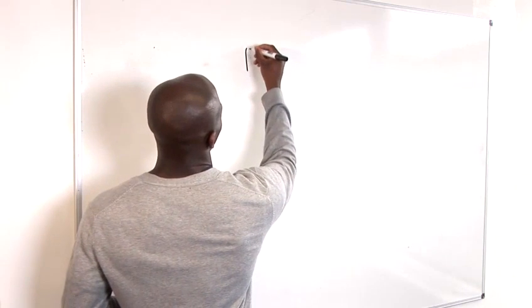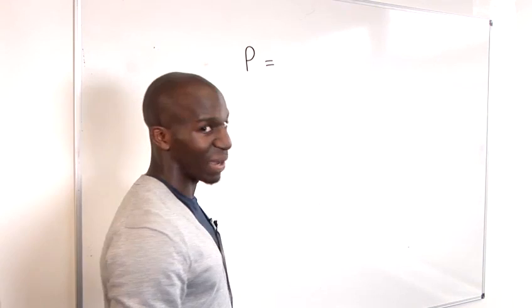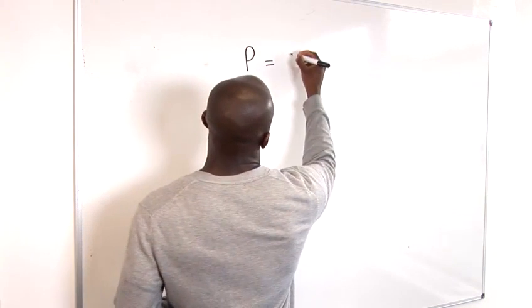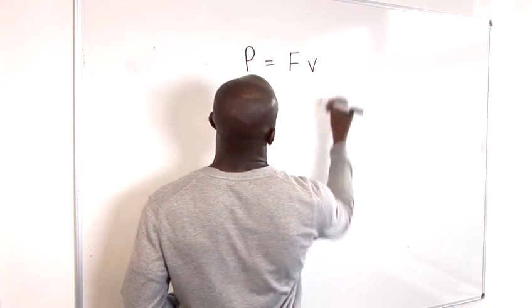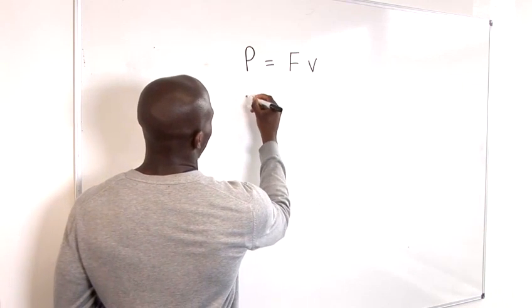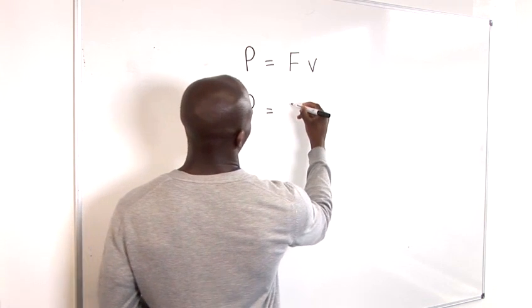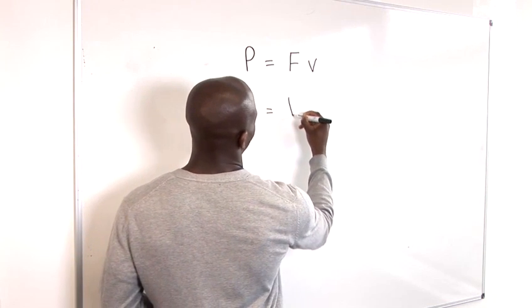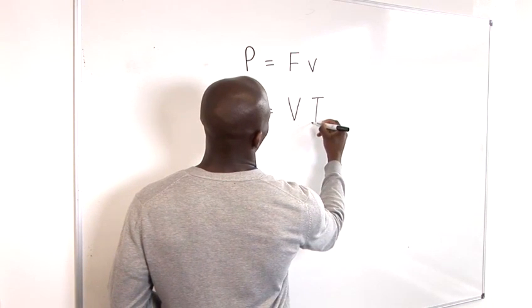Now power is denoted by P and in kinematics you have power calculated by the force multiplied by the velocity. Now in electricity, within a circuit you might come across power being calculated by the voltage multiplied by the current.